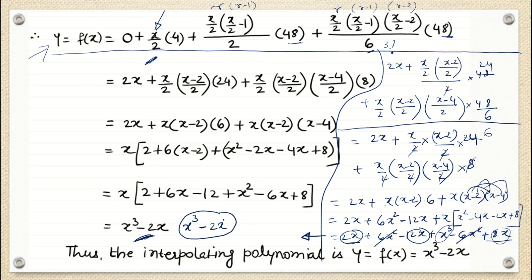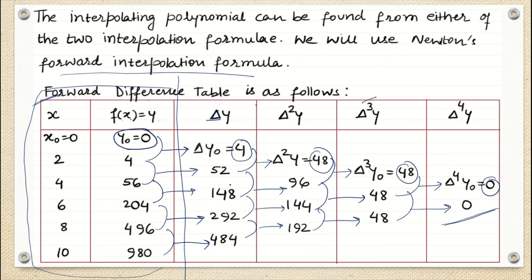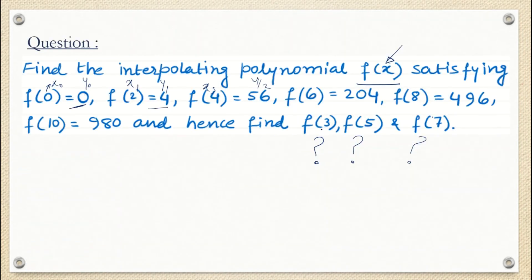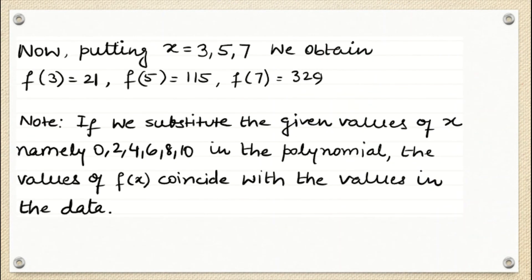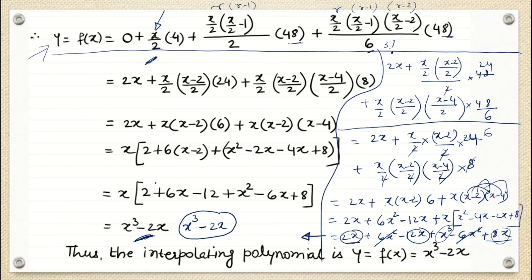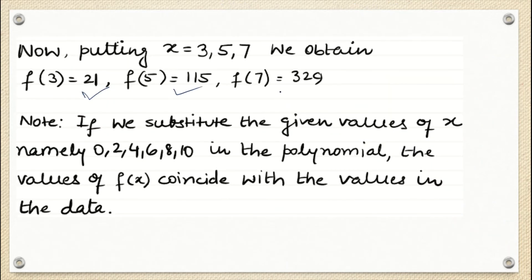This is the general form — the interpolating polynomial f(x) = x³ − 2x. They asked us to find f(3), f(5), and f(7). For f(3): 3³ − 2×3 = 27 − 6 = 21. Similarly, f(5) and f(7) can be found by substituting x = 5 and x = 7 into the polynomial.